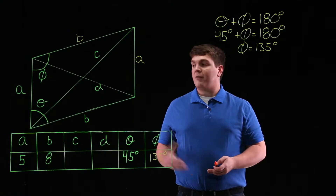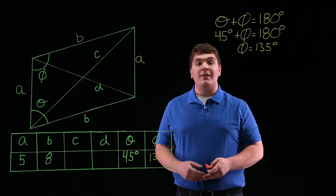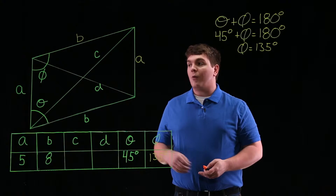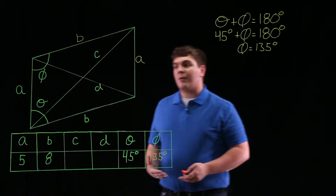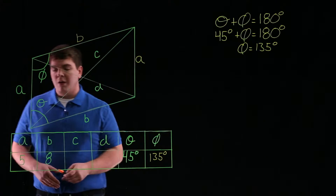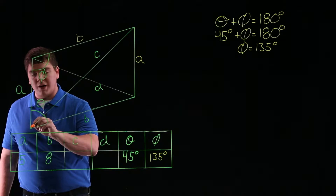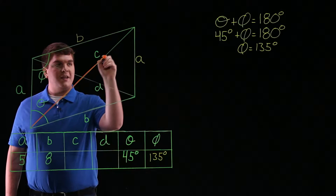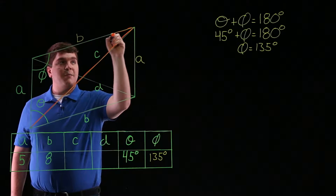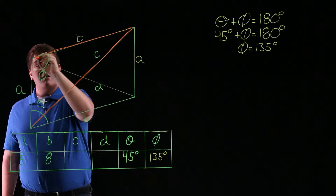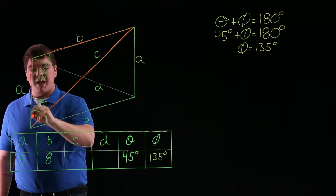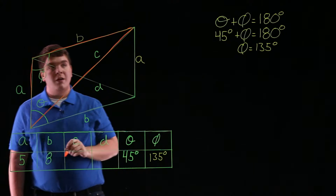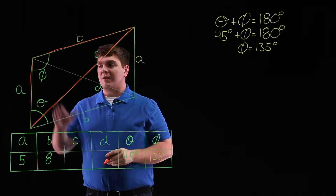Now that we know both of the angles, theta and phi, we can solve for C or D. Let's begin by solving for C. Here we'll consider the triangle with side C, the top side B, and the left side A.